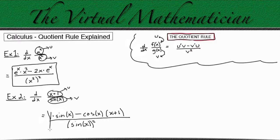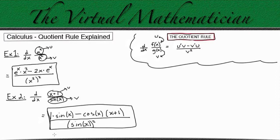And that's it for example two. These are a couple of simple examples of when we need to use the quotient rule in calculus. I hope this helps, and thanks for watching.